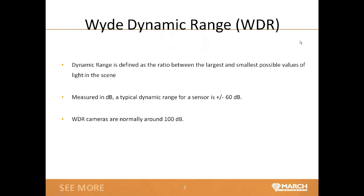Wide dynamic range — everyone should have a basic understanding of what WDR means. It's basically defined as the ratio between the largest and smallest possible values of light in a scene. This becomes difficult in a backlight situation, for example someone standing in front of a window with a lot of light coming from behind. A normal camera won't be able to make out all the details of that person and they appear just as a silhouette. WDR is measured in decibels.